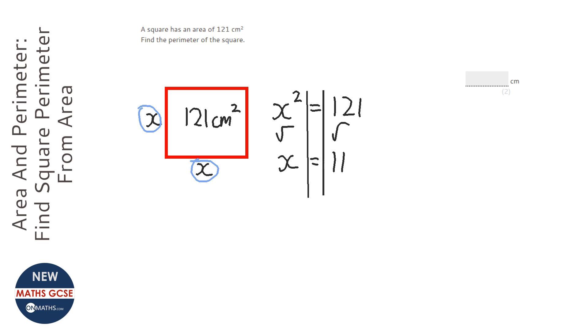So I know that 11 times 11 is 121. Now the temptation is to think, right, I've got the answer 11. But it asks us for the perimeter of the square.